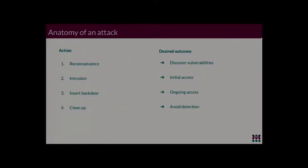I'm going to look at the basic anatomy of an attack. You have reconnaissance — discovering a vulnerability and finding a way to exploit it. You need an intrusion method to get initial access into a system, followed by inserting a backdoor. You want to do this to remain persistent in reinstalling your worm or bot on the device. Finally, you need to avoid detection. Most worms, botnets, and malware find a way to prevent the user from knowing they exist in the system.